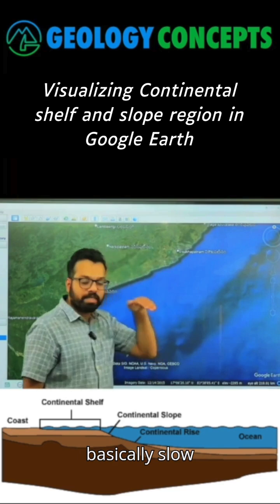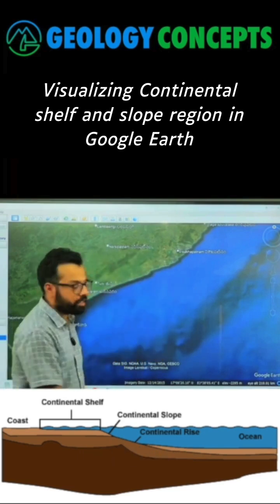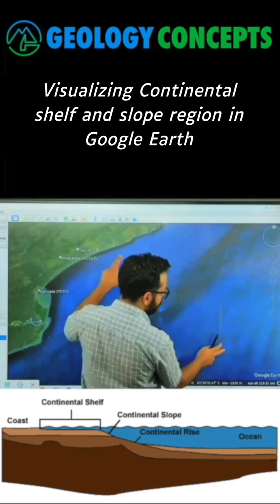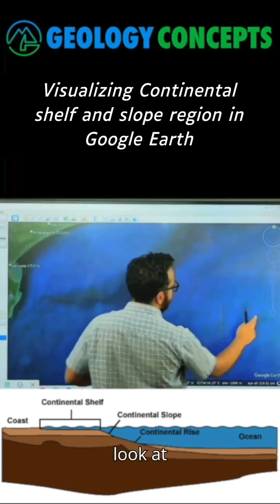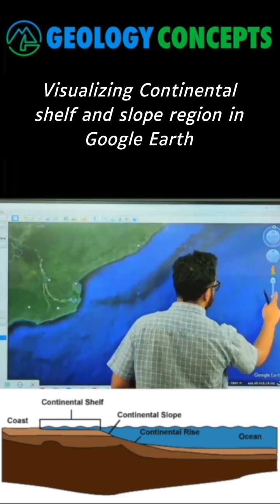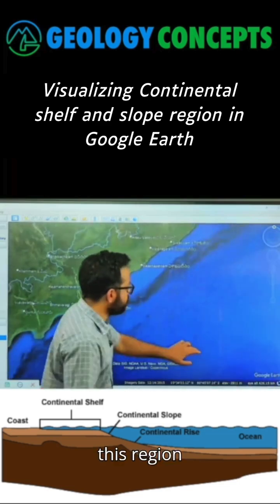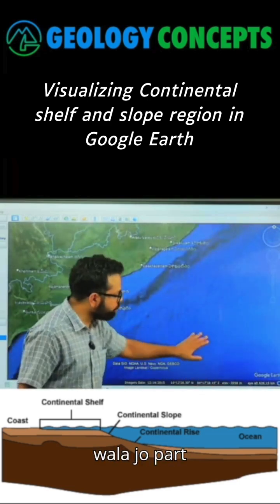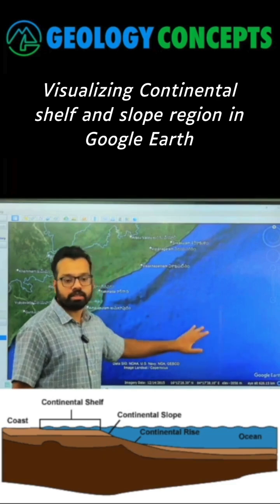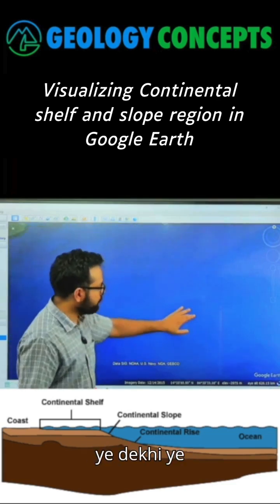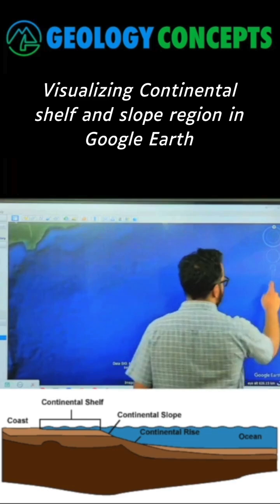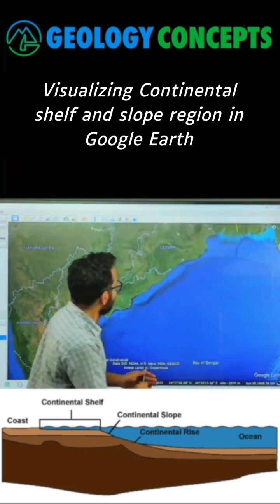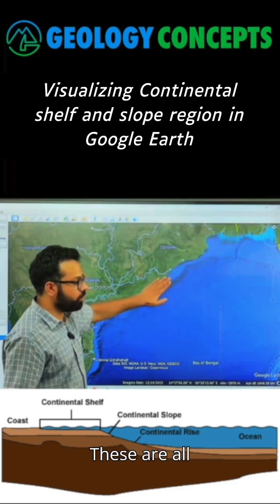So basically, the slope. Then if you look at this region, minus 3000. So these are the part of oceanic crust. You can see the part over here which is extending — these are all continental shelves. And then you have oceanic crust.